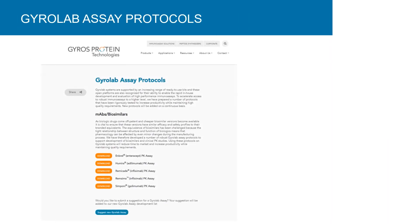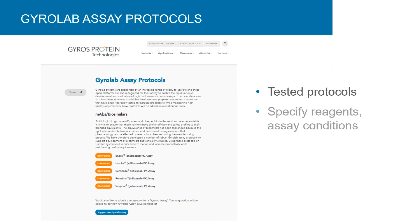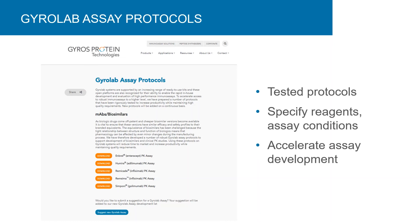To accelerate development of biosimilars, ready-to-use and robust Gyrolab PK assay protocols are available for download on the Gyros Protein Technologies website. The protocols provide carefully tested Gyrolab assay methods specifying the assay design, CD type, antibody capture and detection reagents, REC-zip buffer, dilutions, and needle wash buffers.